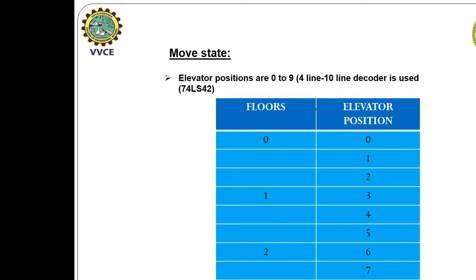There are four floors: 0th, 1st, 2nd, and 3rd. The elevator position at the 0th floor is 0, at the 1st floor it is 3, at the 2nd floor it is 6, and at the 3rd floor it is 9. These are multiples of 3: 0, 3, 6, and 9.